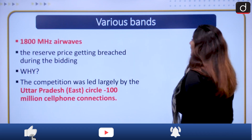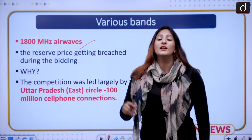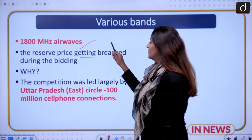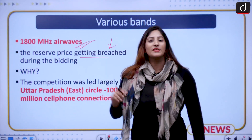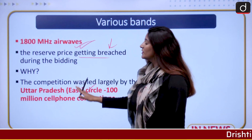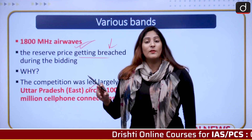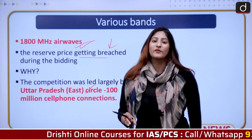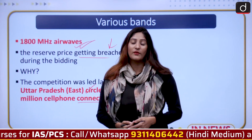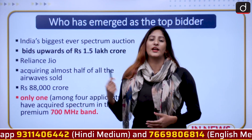The 1800 MHz band is the only band whose bidding price was breached above the reserve price — others were sold at base price. This happened because competition was very high for Uttar Pradesh East Telephony, which works really well with the 1800 MHz airwave. Uttar Pradesh East has the highest number of smartphone users, with over 100 million cell phone connections, making it a highly contested market.